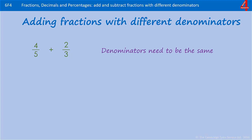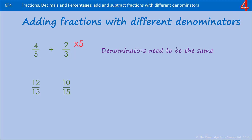We need to find the common denominator. The lowest common multiple of 5 and 3 is 15, so we'll make the denominator 15. To get from 5 to 15 we multiplied by 3, so we do the same with the 4. To get from 3 to 15 we multiplied by 5, so we do the same with the 2. Now the denominators are the same, we can add them together — how many fifteenths do we have? 12 and 10 is 22.